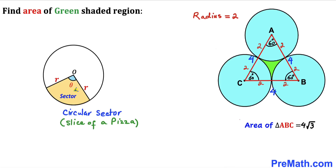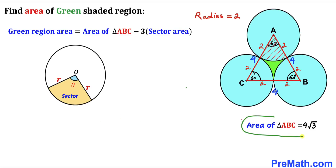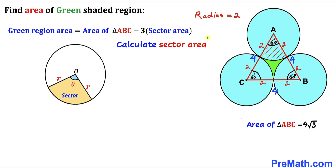Now let's focus on the circular sectors inside the triangle. Each circular slice is called a circular sector. There are three such sectors — one at each vertex. The green shaded region between the circles equals the area of equilateral triangle ABC minus 3 times the area of one sector, since all three sectors are identical.